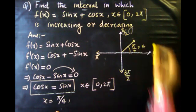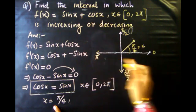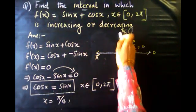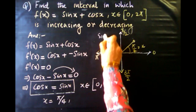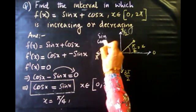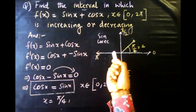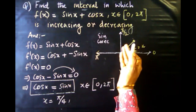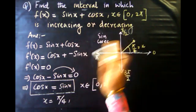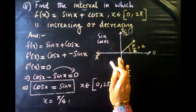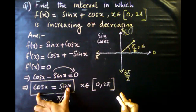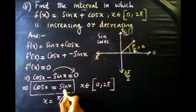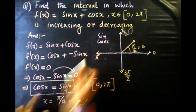Looking at the quadrants: in the second quadrant, sin is positive but the other trigonometric functions may be negative. Sin is positive in the second quadrant, while cos is negative.